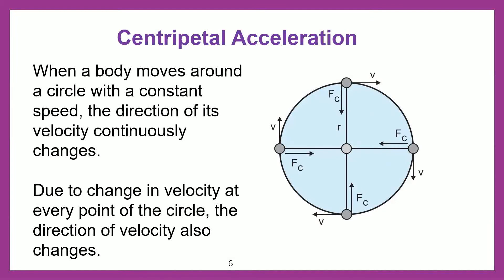Centripetal acceleration. When a body moves around a circle with constant speed, the direction of its velocity continuously changes. Due to change in velocity at every point of the circle, the direction of the velocity also changes. In this diagram, FC is the centripetal force that is acting toward the center. Whenever the centripetal force is acting toward the center, the value of the acceleration is also acting toward the center, and that acceleration is called centripetal acceleration. To understand centripetal force, we first have to know what centripetal acceleration is.